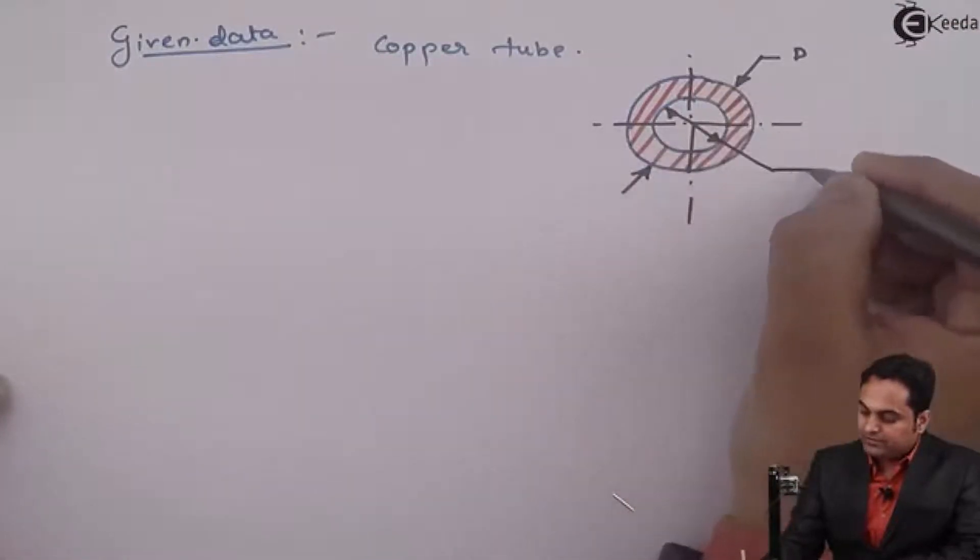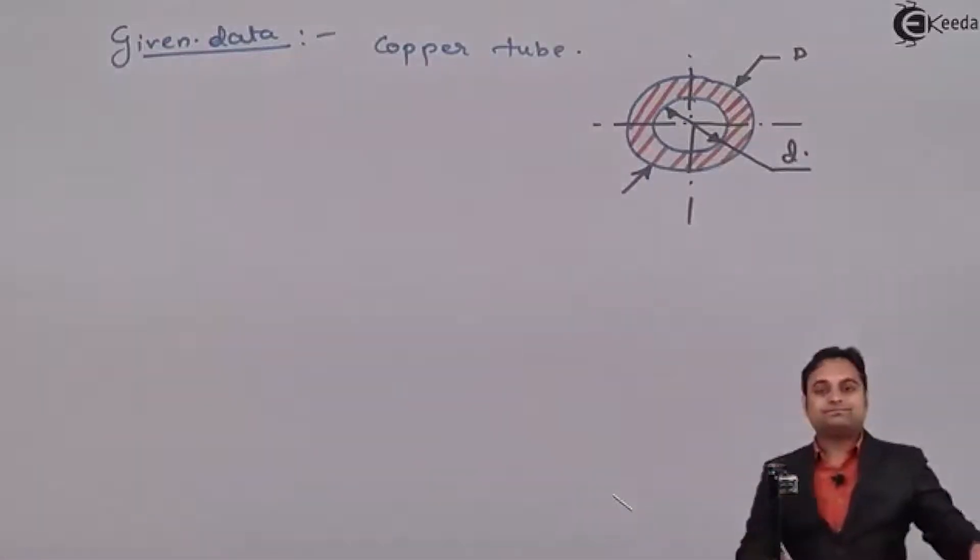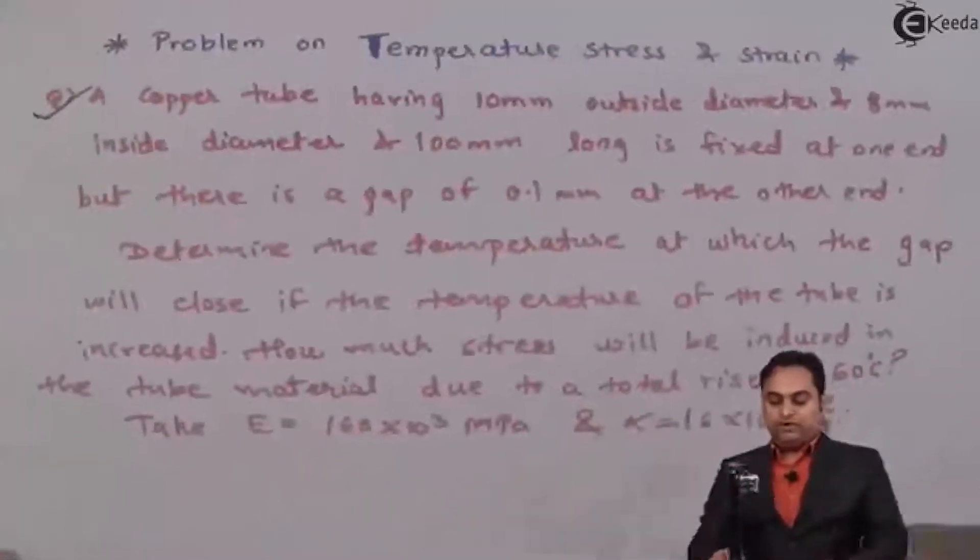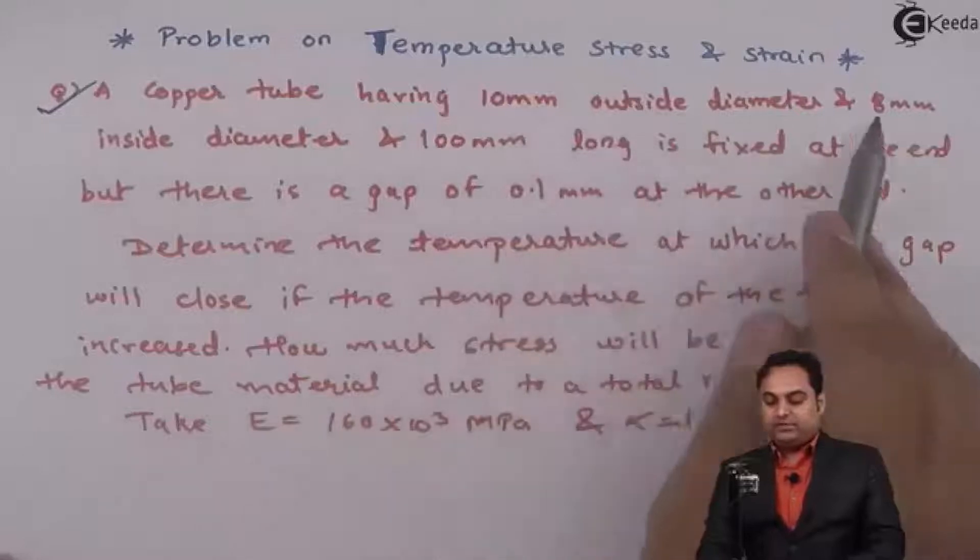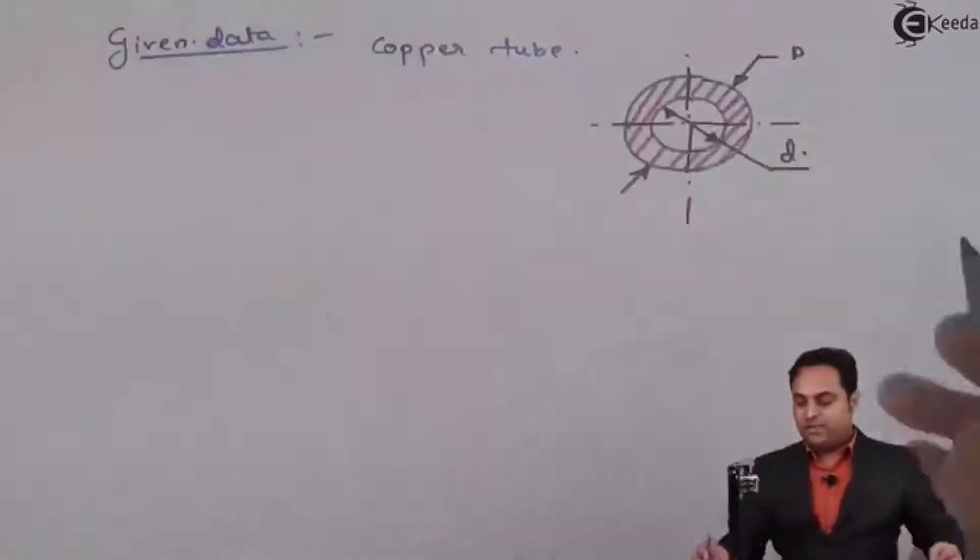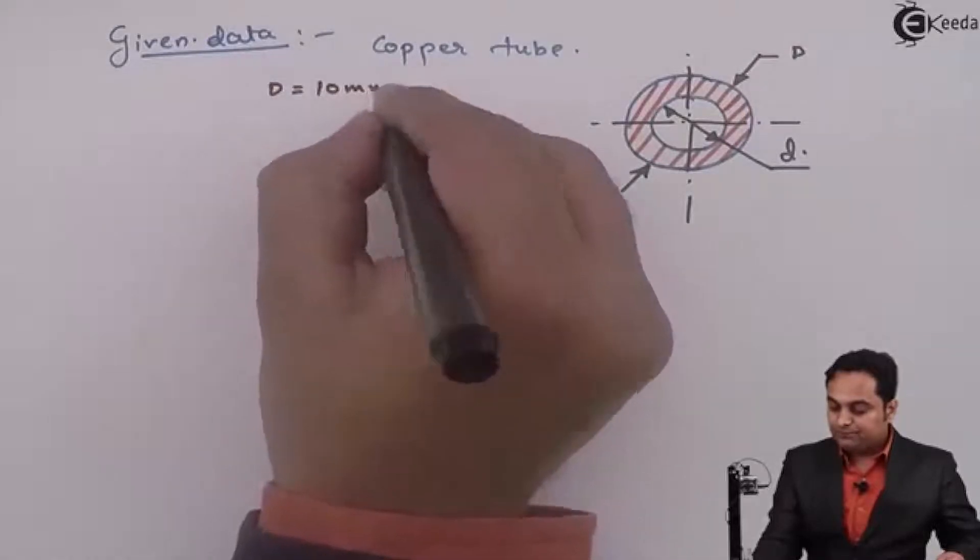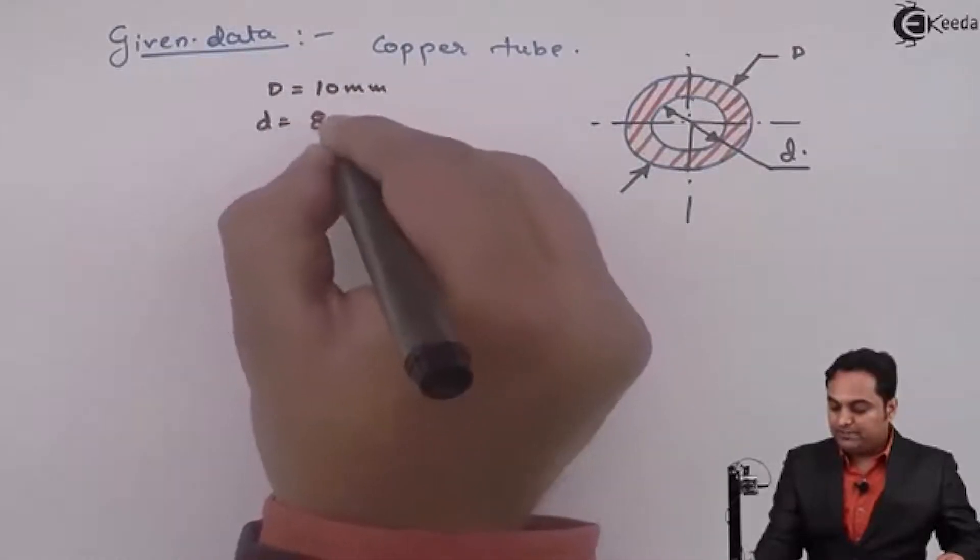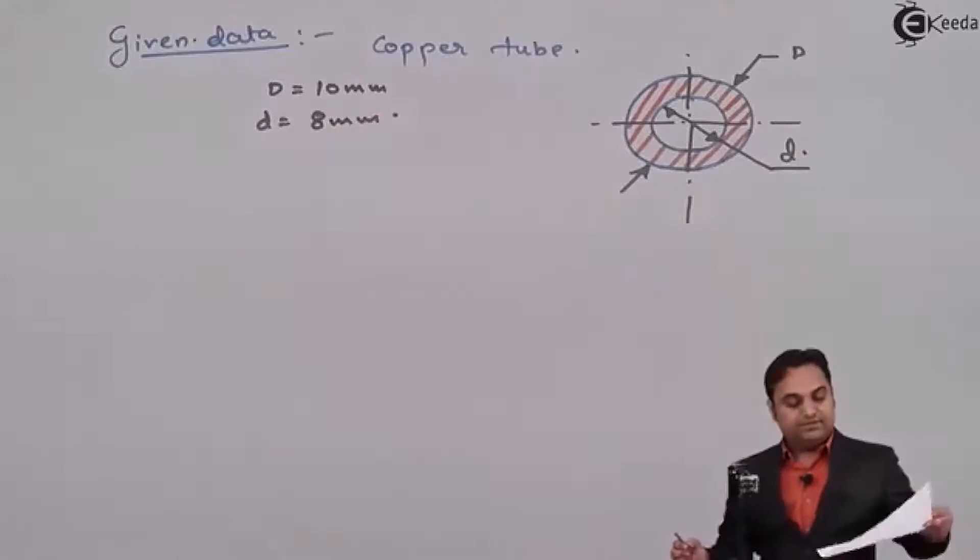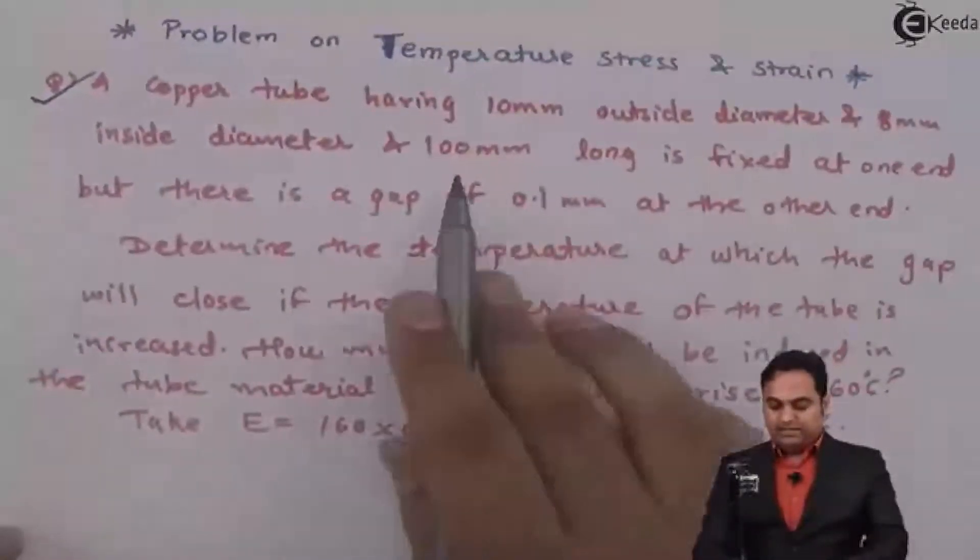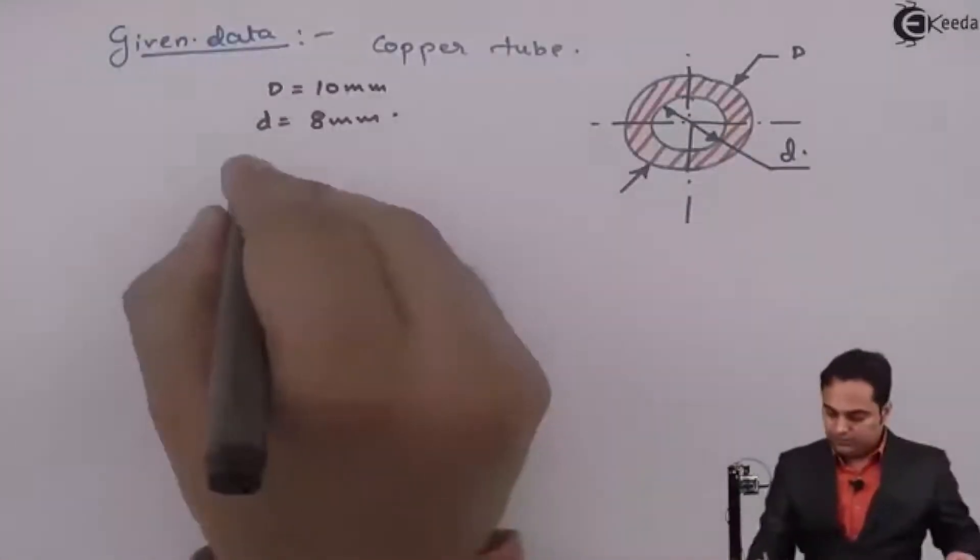Hollow section having external diameter capital D and internal diameter small d. It is given that copper tube having 10 mm outside diameter and 8 mm inside diameter, so capital D is 10 mm, small d is 8 mm. Next, it is 100 mm long. Length is 100 mm.